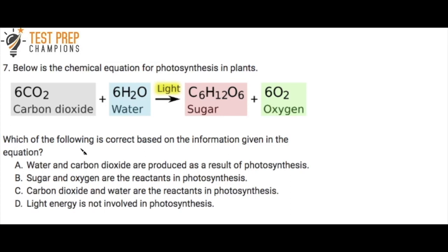Which of the following is correct based on the information given in the equation? A: Water and carbon dioxide are produced as a result of photosynthesis. B: Sugar and oxygen are the reactants in photosynthesis. C: Carbon dioxide and water are the reactants in photosynthesis. Or D: Light energy is not involved in photosynthesis.